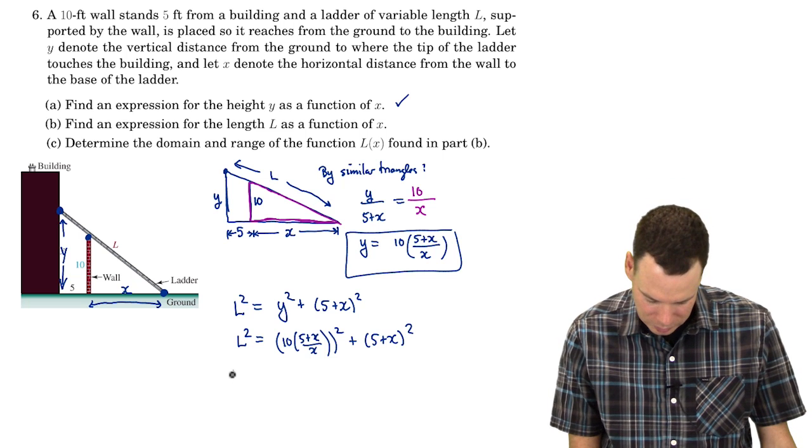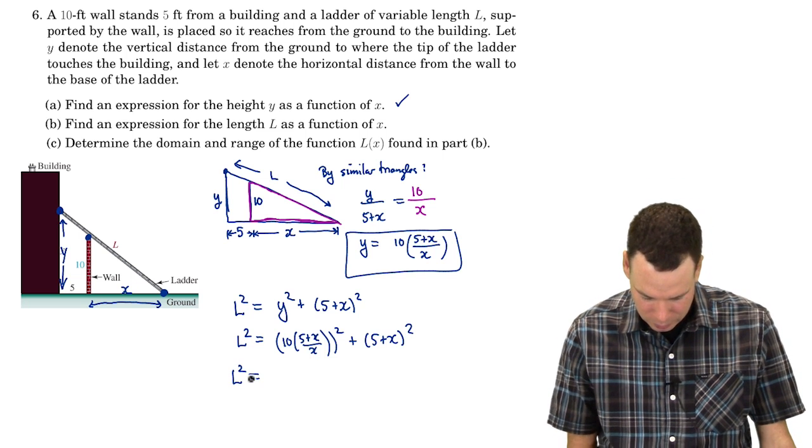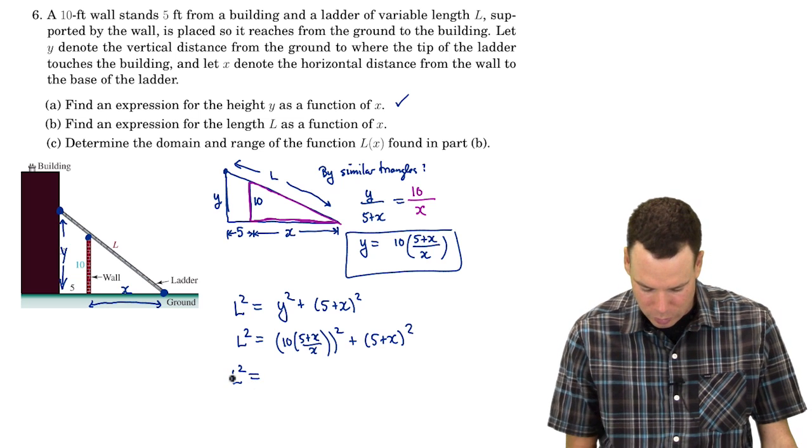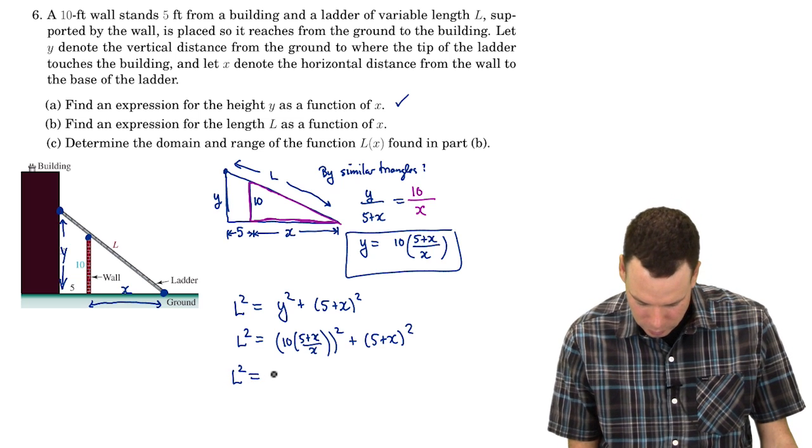Now I've got a relationship between L² and X. So I can maybe fiddle around with this a little bit and see if I can get L by itself on one side. Right now I've got L², I want L by itself.